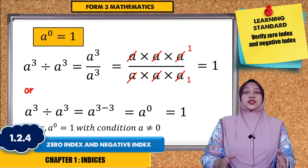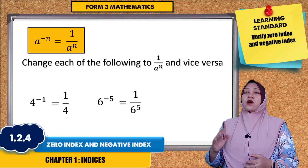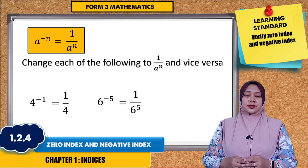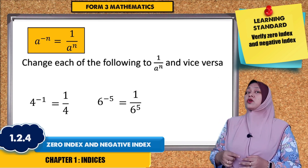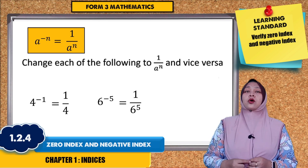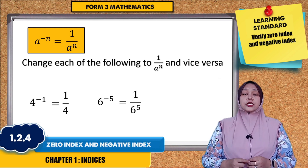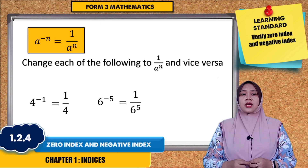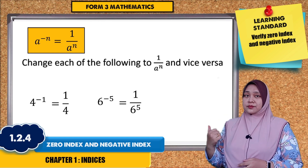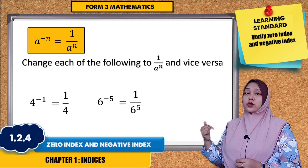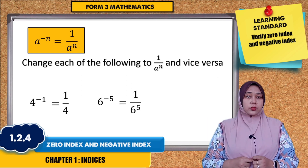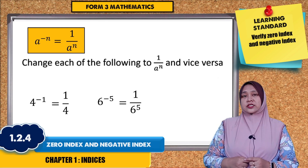Now we proceed to the next law of indices, which is negative index. A to the power of negative N will give the answer 1 over A to the power of N. The question asks: change each of the following to 1 over A to the power of N, and vice versa.